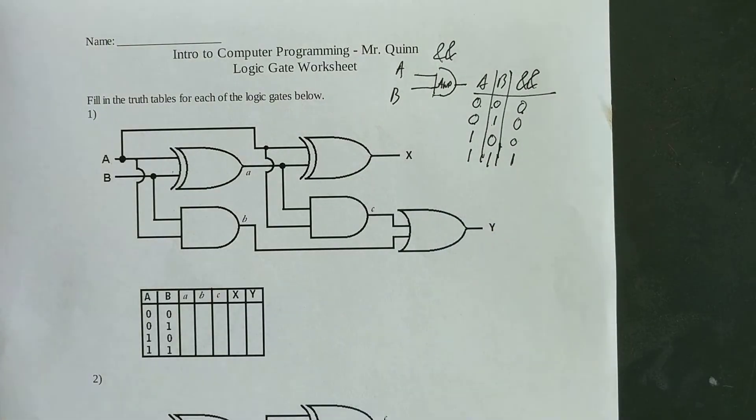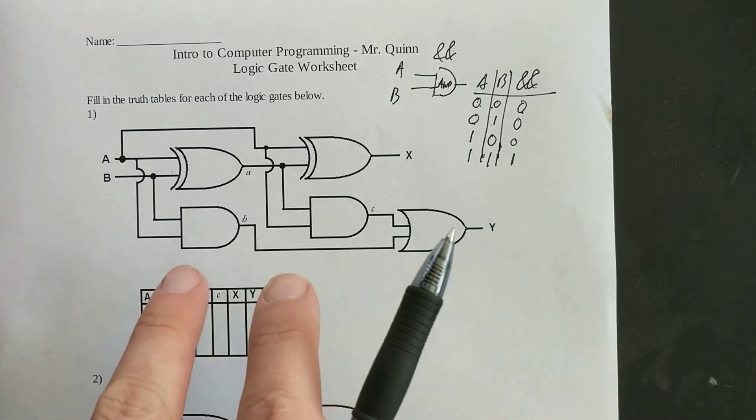So AND gates are really useful if you're trying to make a decision where you need two things to be true. For example, it's raining and I have to go outside. Do I need an umbrella? Well, if you asked a computer, it's going to use an AND gate to make that decision for you.